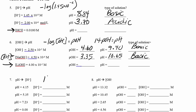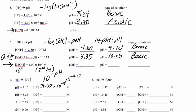More calculator practice: 10 to the negative pH. Use the second function on your calculator — second log, labeled 10 to the X. So 10 to the negative 4.15 gives 7.08×10⁻⁵. And 10 to the negative 5.35 gives 4.47×10⁻⁶.